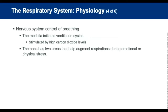The nervous system controls breathing. The medulla oblongata initiates the ventilation cycle, is primarily stimulated by high carbon dioxide levels, controls the rhythm of breathing, and sends a signal to the diaphragm via the phrenic nerve. The pons has two areas that help regulate respiration during emotional and physiological stress, helping change the depth of inspiration, expiration, or both.